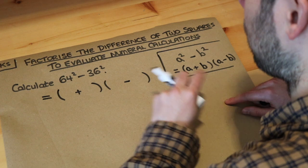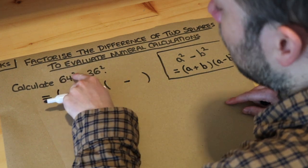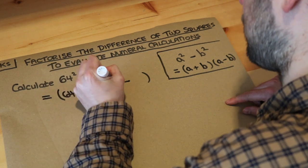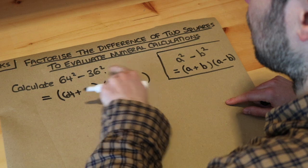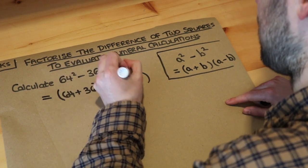Then we do the square root of each of the things. The square root of 64 squared, well the square root just cancels the squared, we just get 64. So I'm going to put 64 as the first thing in each bracket. The square root of 36 squared is 36, so we put 36 here and here.